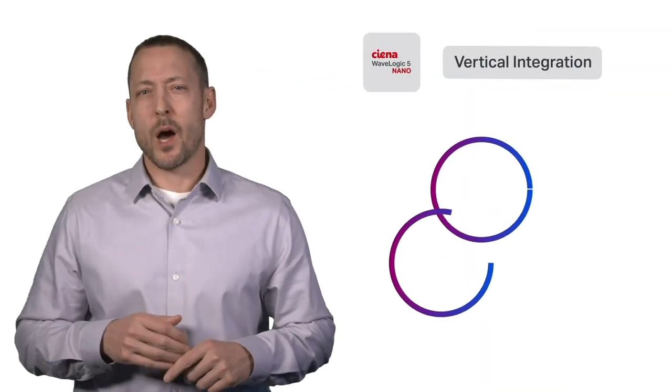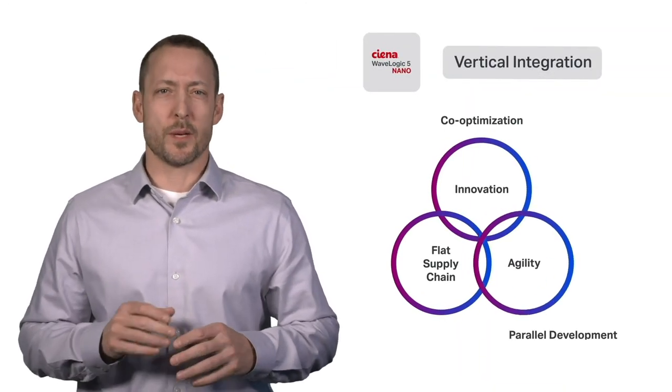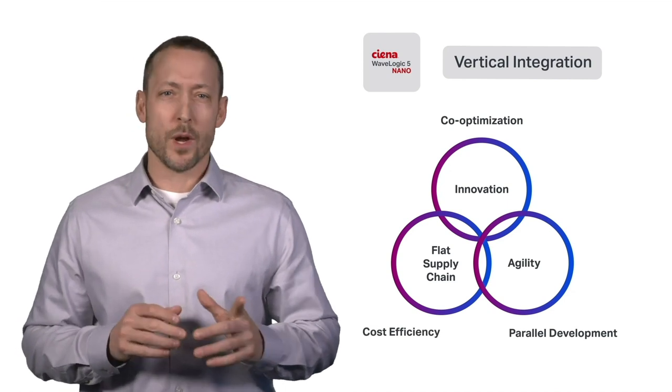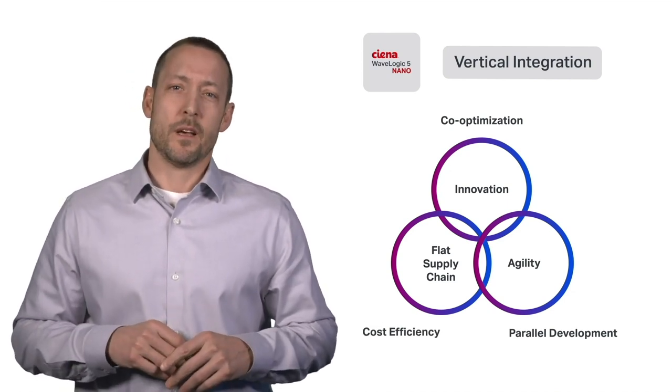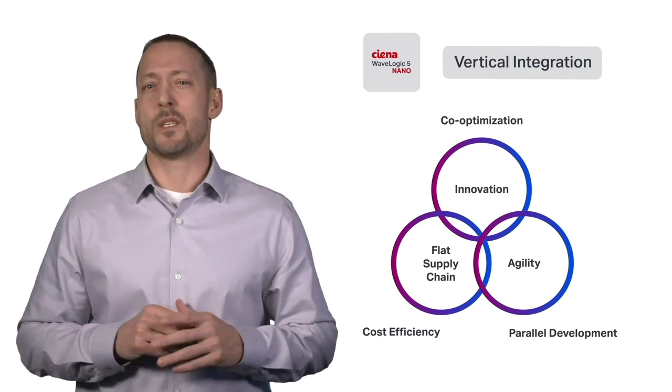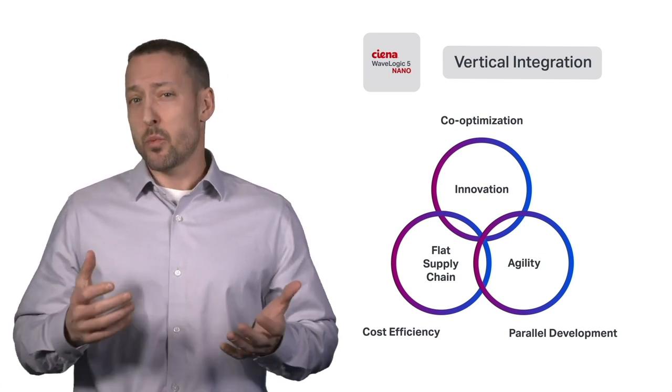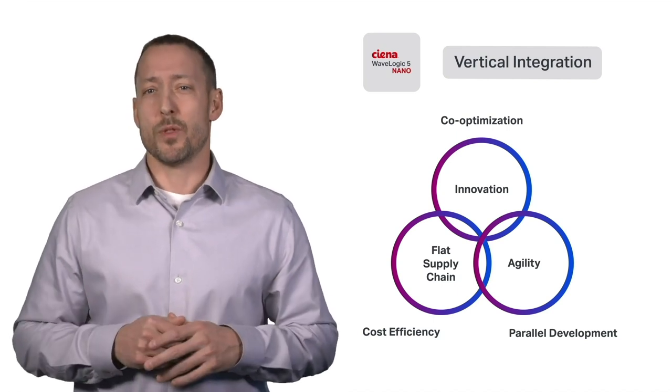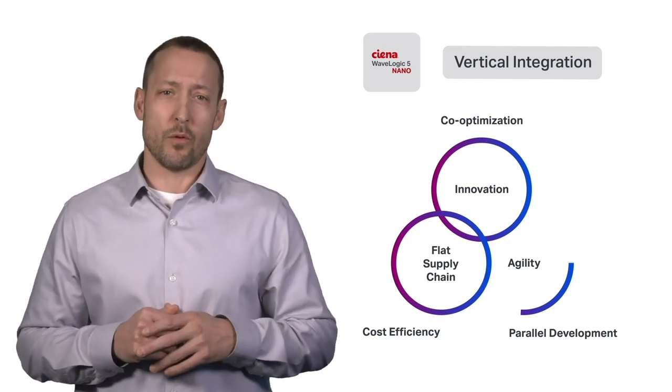WaveLogic 5 Nano powers footprint-optimized solutions that support wavelength capacity rates from 100 gig to 400 gigabits per second. Being vertically integrated with investments in both DSP and high-speed silicon photonics means we can offer an optimized design with the right features and cost points our customers are looking for.